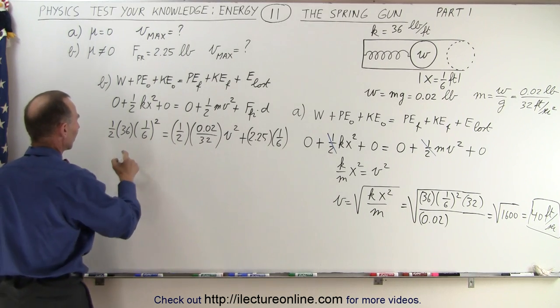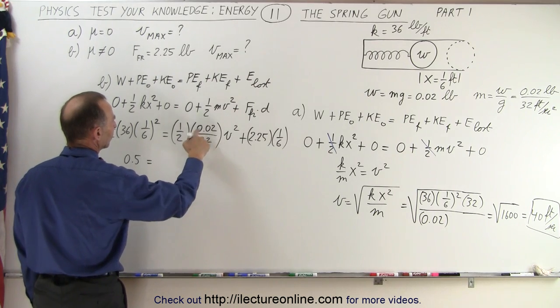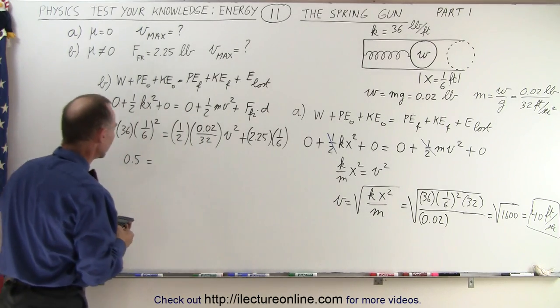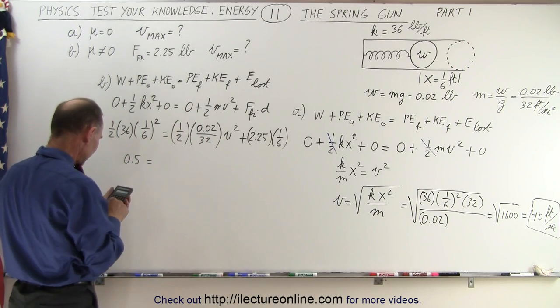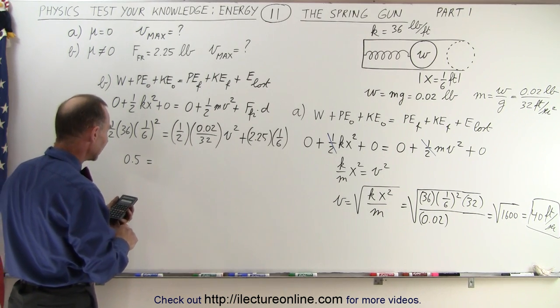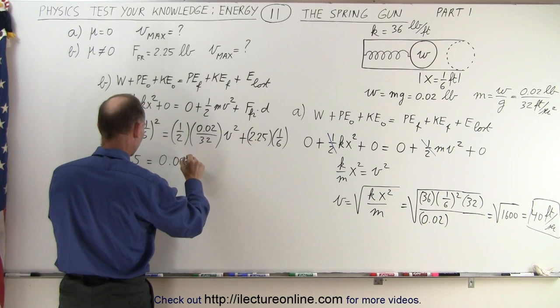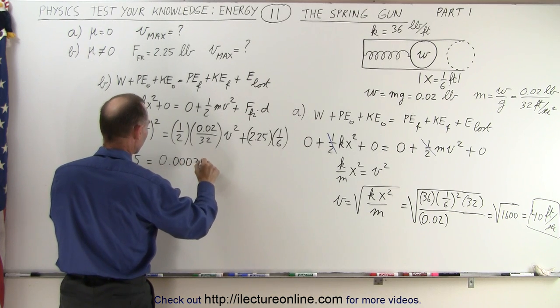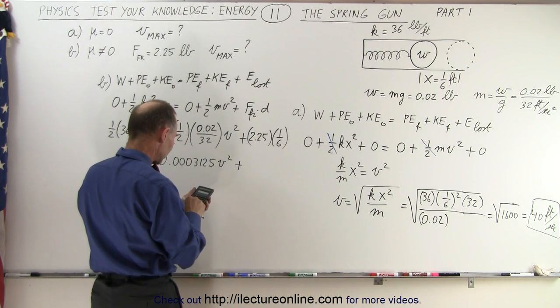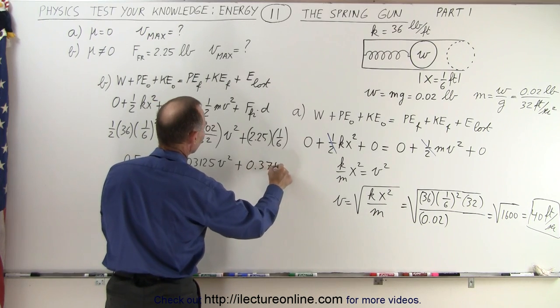All right, simplifying this, this would be 0.5 is equal to, that would be, let's see here, there's 0.02, I better grab a calculator for that one, so we have 0.01 divided by 32, so 0.01 divided by 32, which is 0.0003125 times v squared, plus 2.25 divided by 6, and that would be 0.375.